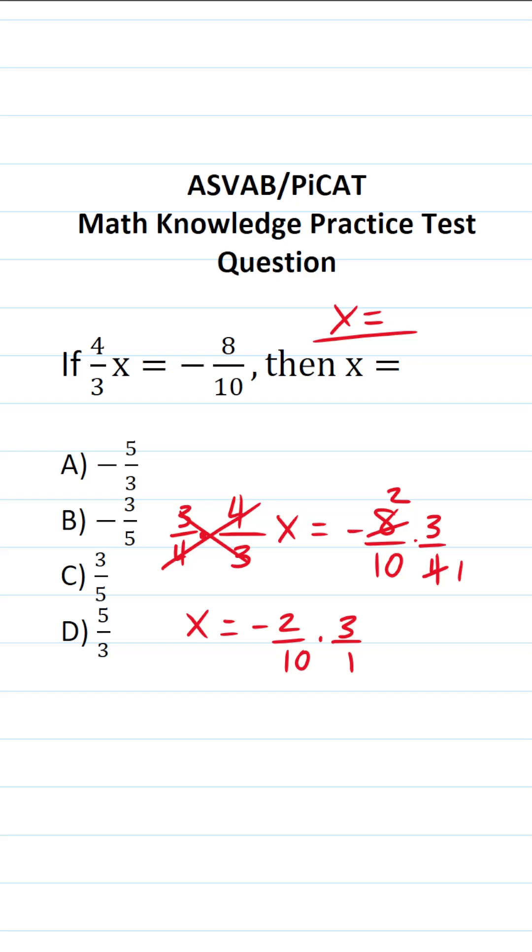That is to say, we're multiplying two fractions now. When you multiply two fractions, you multiply straight across. This becomes, and again, this is negative two tenths. This negative goes with the whole fraction. A negative times a positive is going to be a negative. Two times three is six. Ten times one is ten.